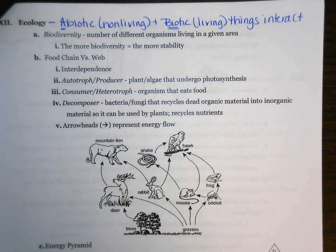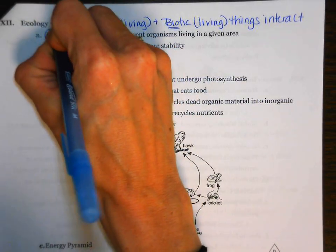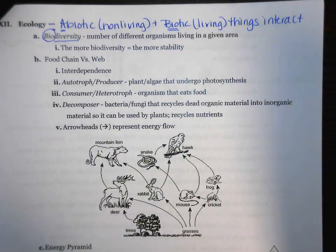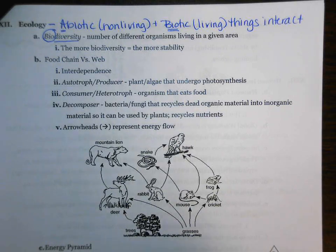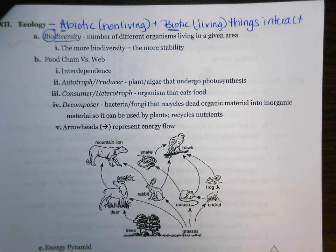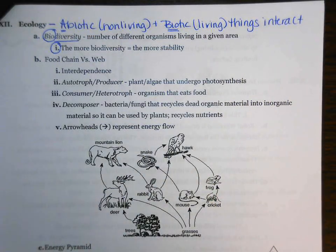First, we have the term biodiversity. 'Bio' means living, and 'diversity' means different. Biodiversity is the number of different organisms living in a given area. For example, in an area you might see deer, mice, squirrels, birds, amphibians, reptiles, humans, and a variety of trees like oak and maple, grasses, and flowering plants. Remember, it's good to have a lot of biodiversity — the more biodiversity you have, the more stability you have. If one organism were to die, it would not necessarily be detrimental to the entire ecosystem.